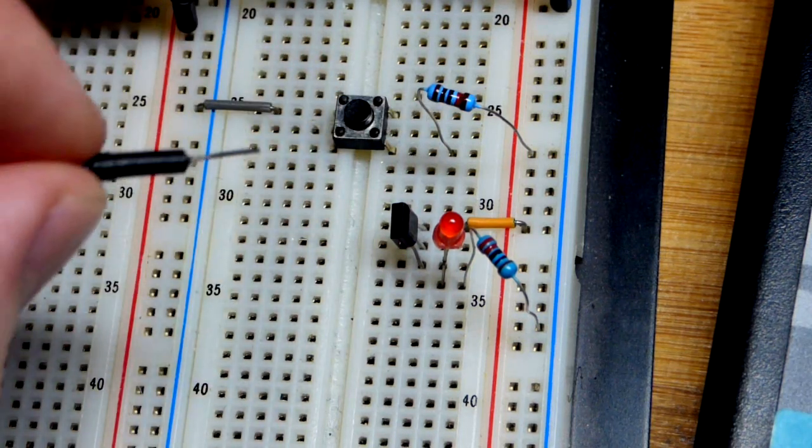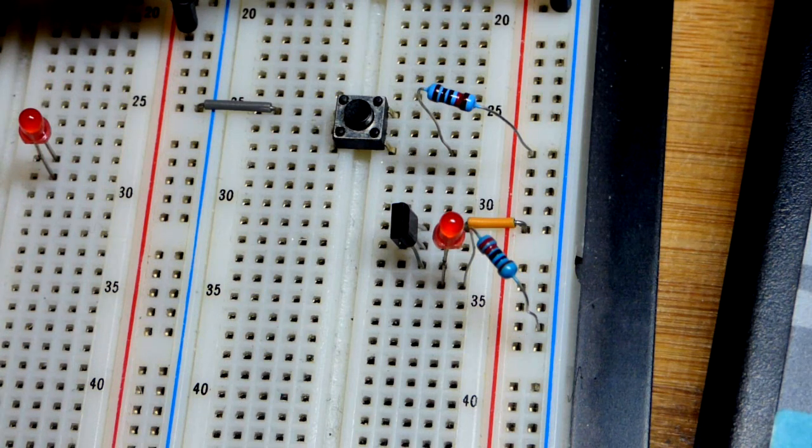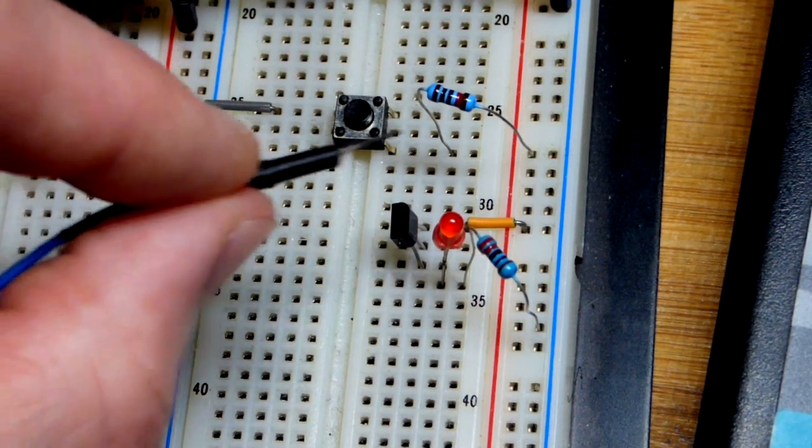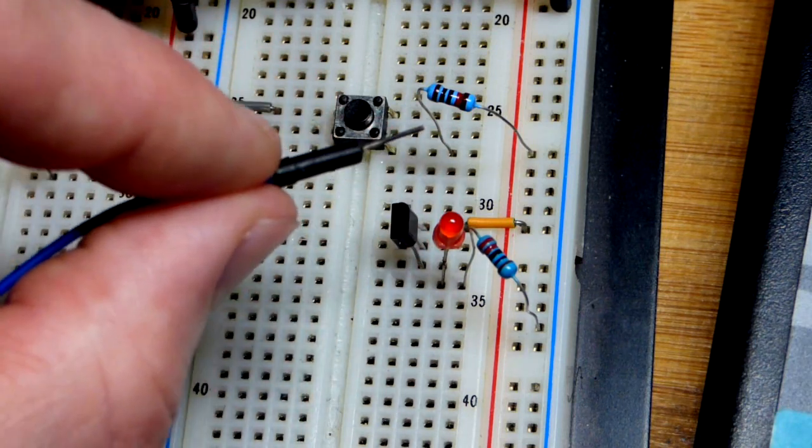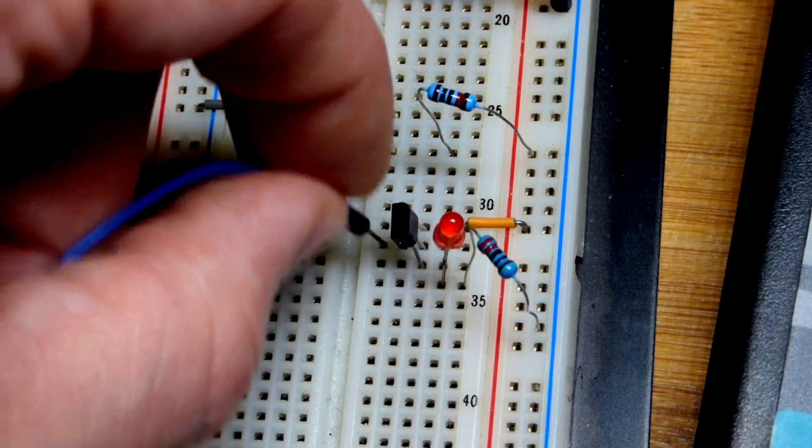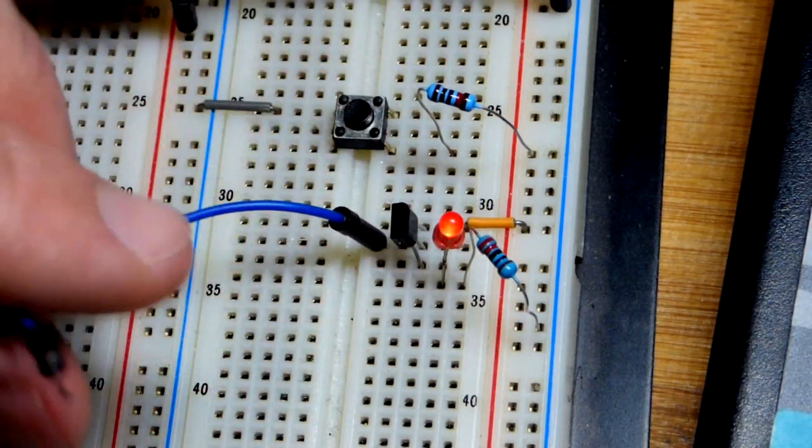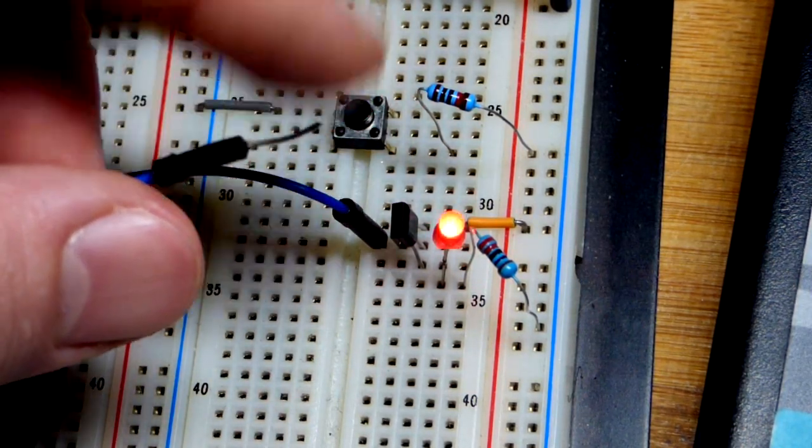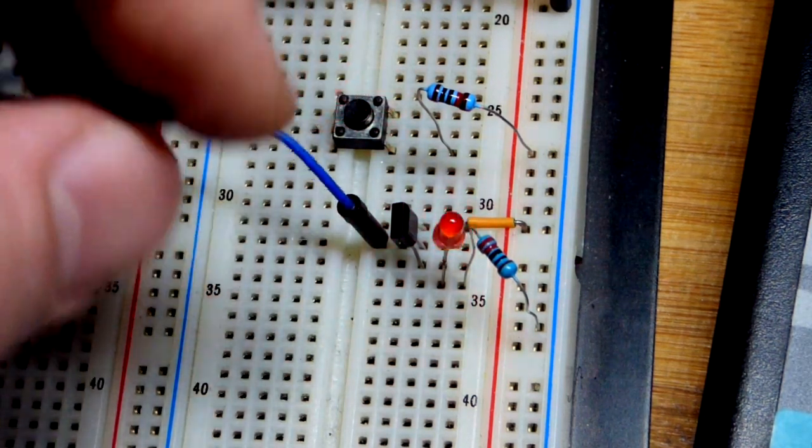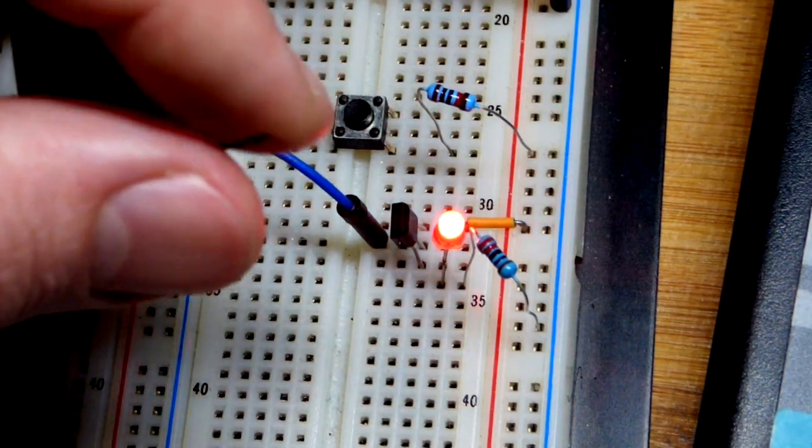We're also going to use a switch. With the N-channel enhancement mode MOSFET of the last video we had the resistor here going to the negative rail and then we were tying that into the gate. You can see that my body can actually trigger this.